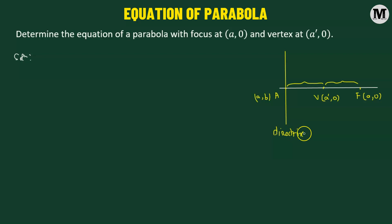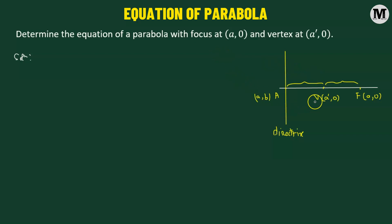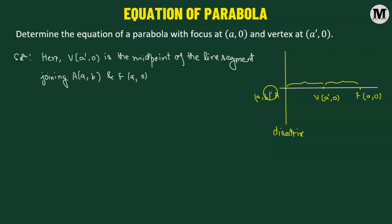Our goal will be to obtain the equation of the directrix. Once we have the equation of the directrix, we can use that along with the focus to obtain the equation of the given parabola. We know that the vertex is the midpoint of the line segment joining A and F. Here I have chosen the coordinates of A as a, b — but to avoid confusion with existing variables, let's call it a1, b1.